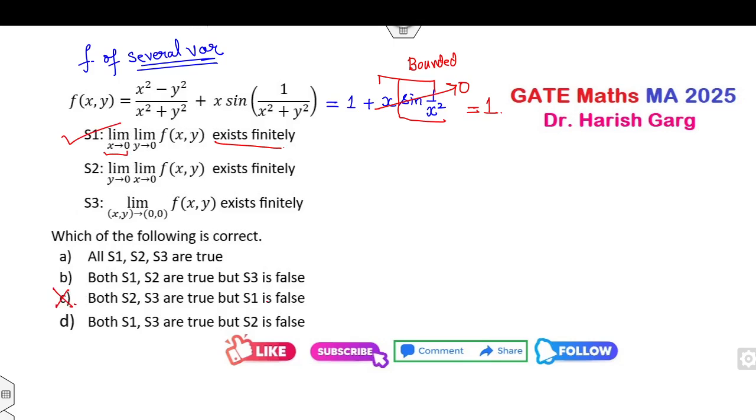Now similarly for the second part, if you consider x is 0, since sine is a bounded function, if you consider x is 0, this value is 0. If you consider x is 0, this value is minus 1. Yes, this also is my correct statement. So S2 is false, again d option cancelled.